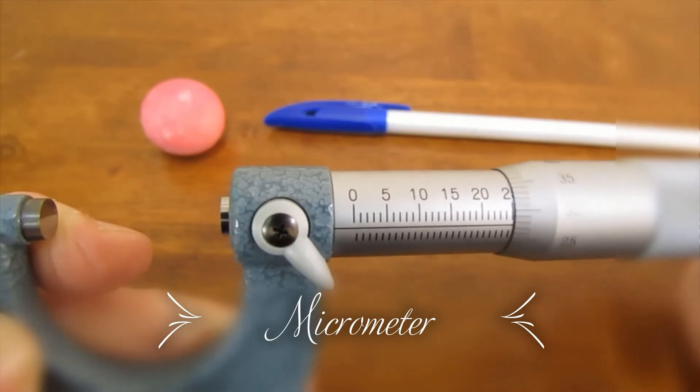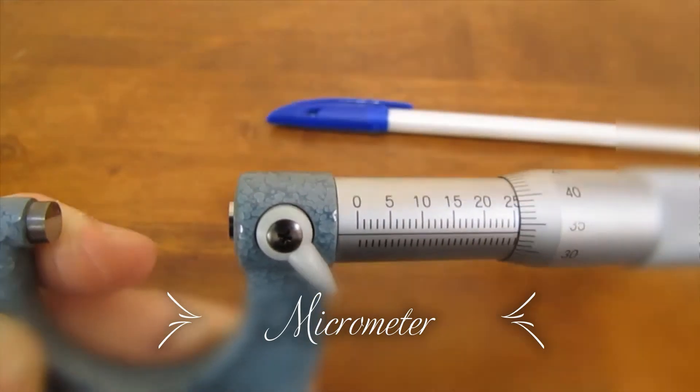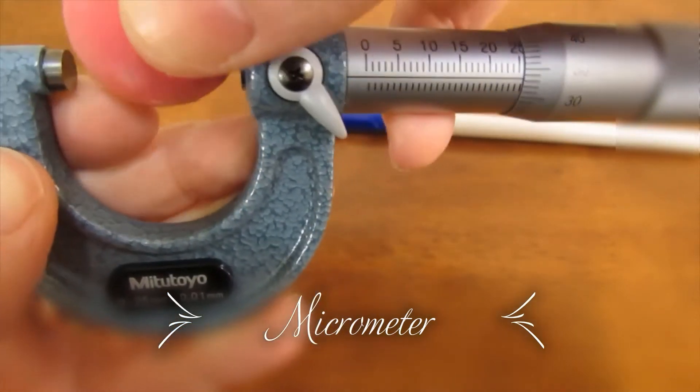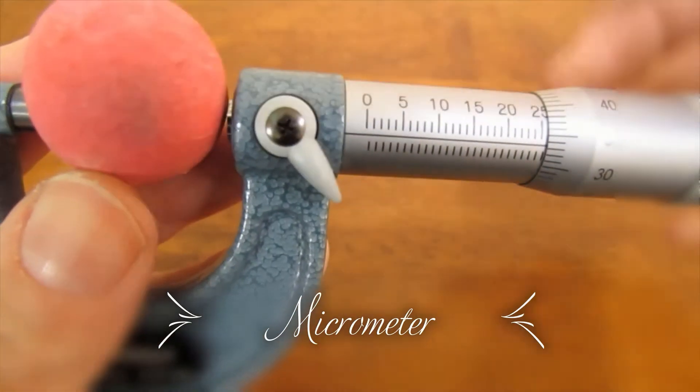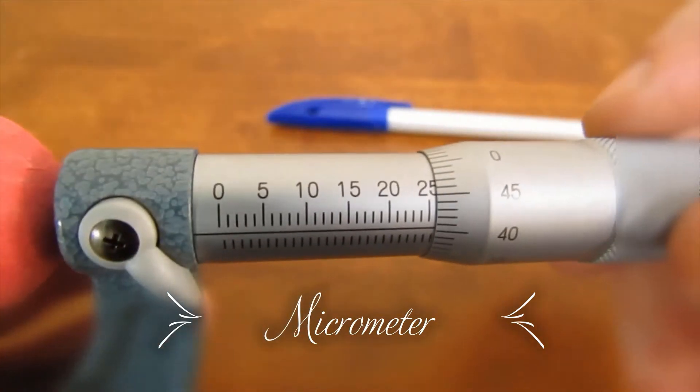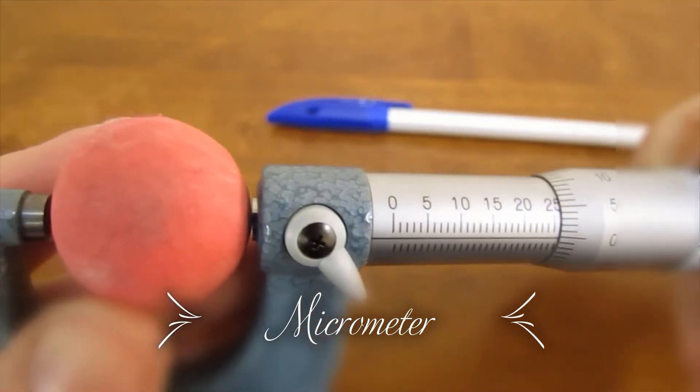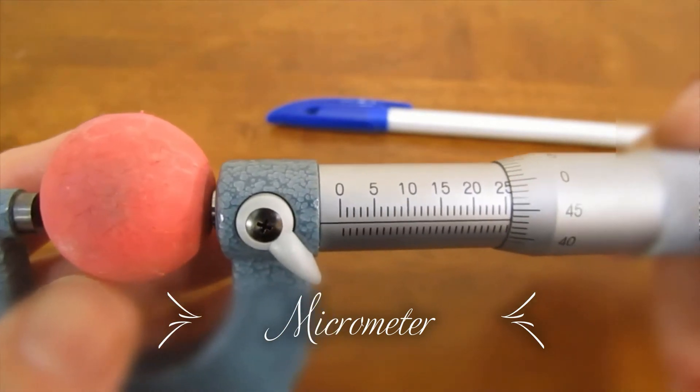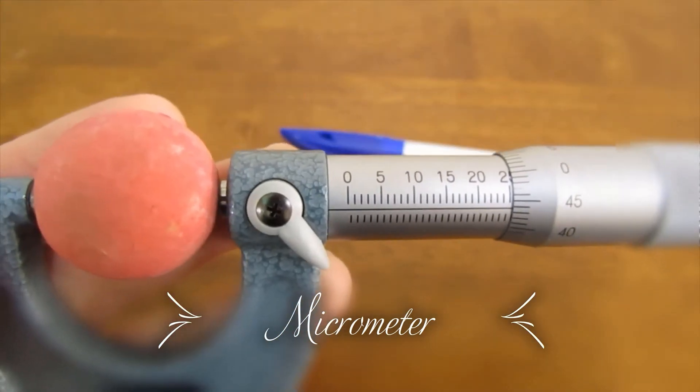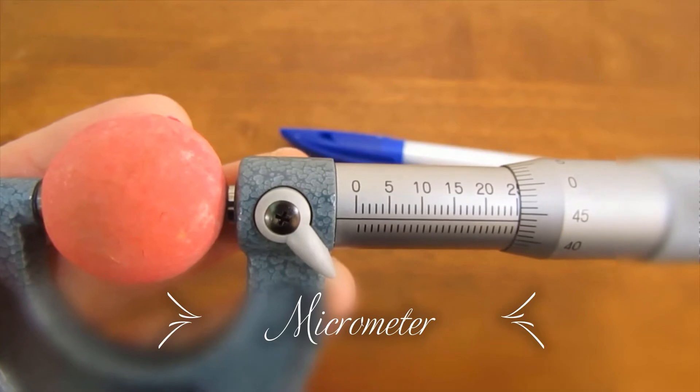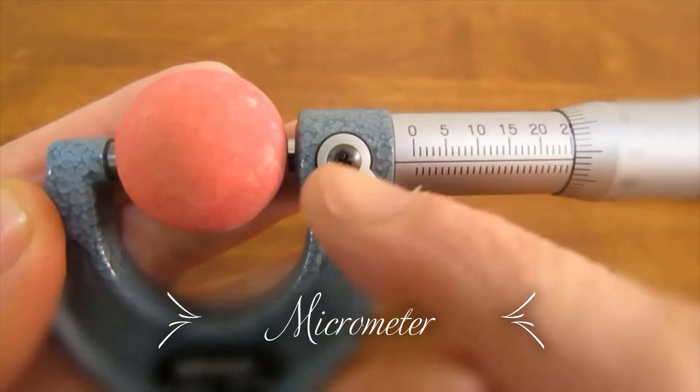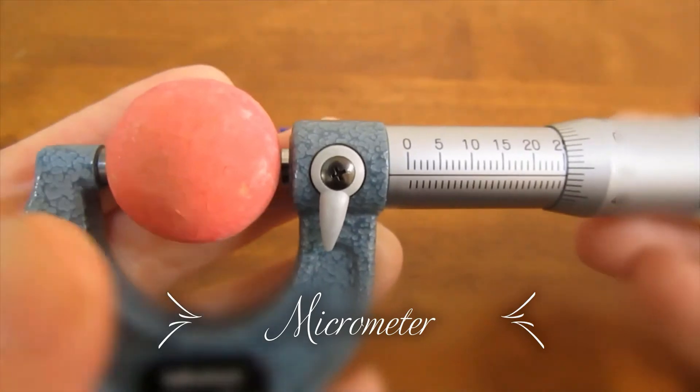You can put an object which could be up to 25 mm in length between the anvil and the spindle. Unlock the spindle with this lever here.